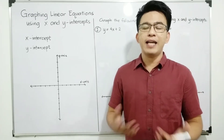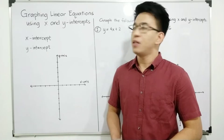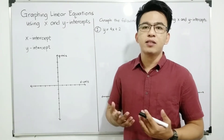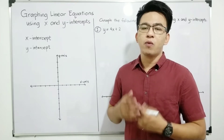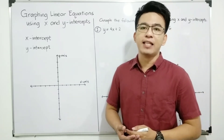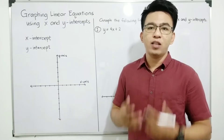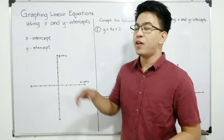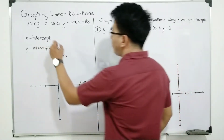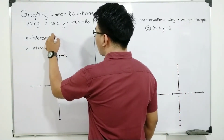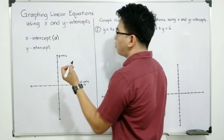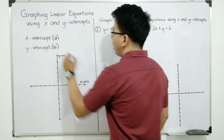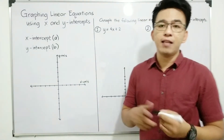What is the x and y intercept? The x-intercept and the y-intercept are the points wherein the line intersected the x and y axis. The x-intercept is commonly represented by letter A, and your y-intercept is commonly represented by letter B.